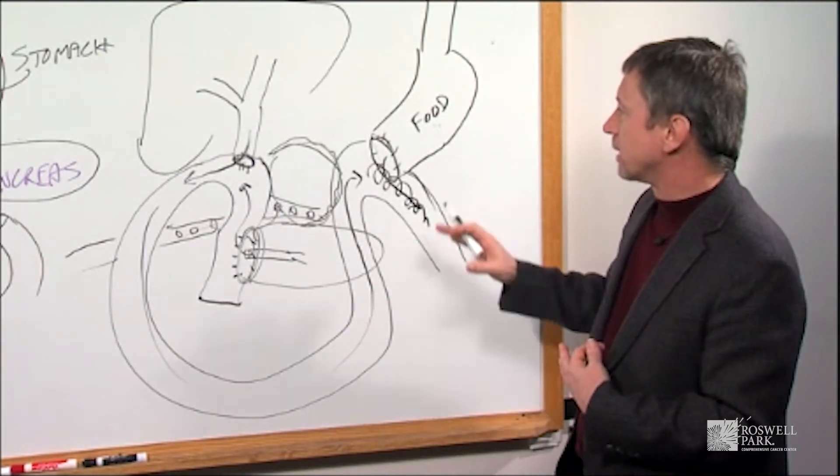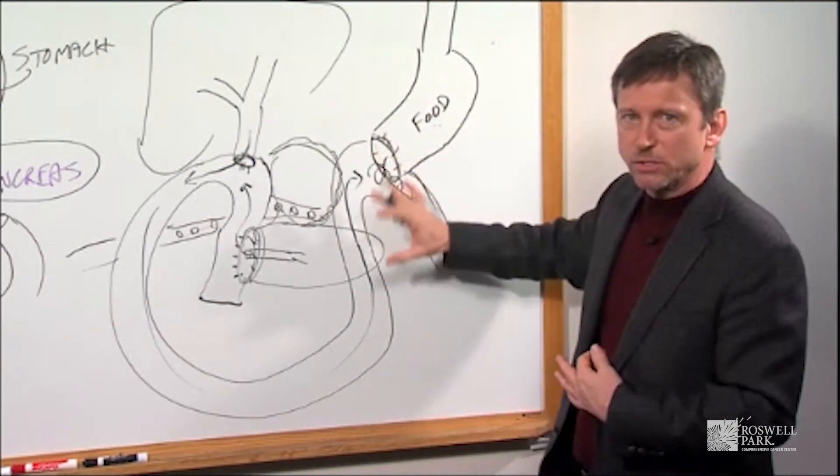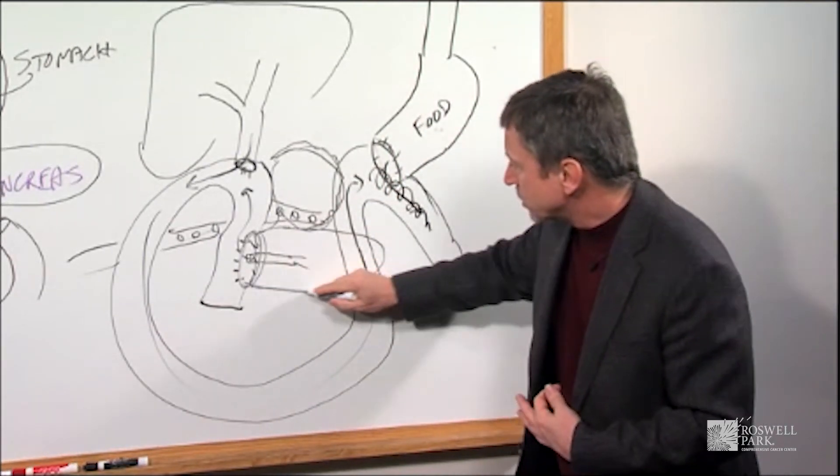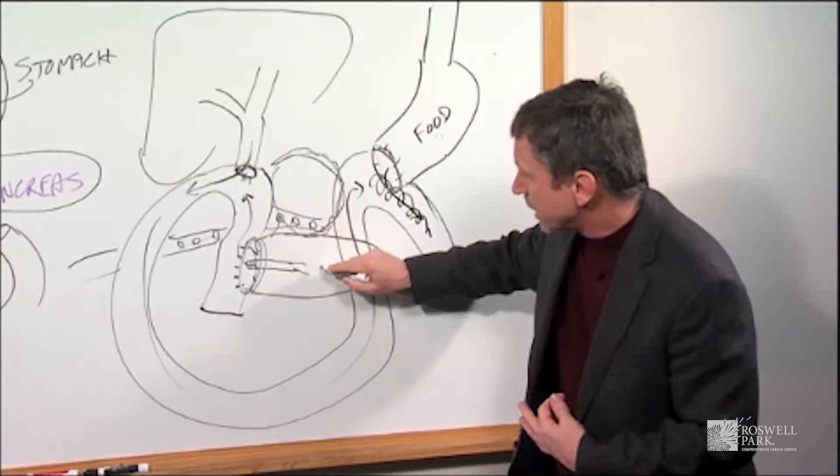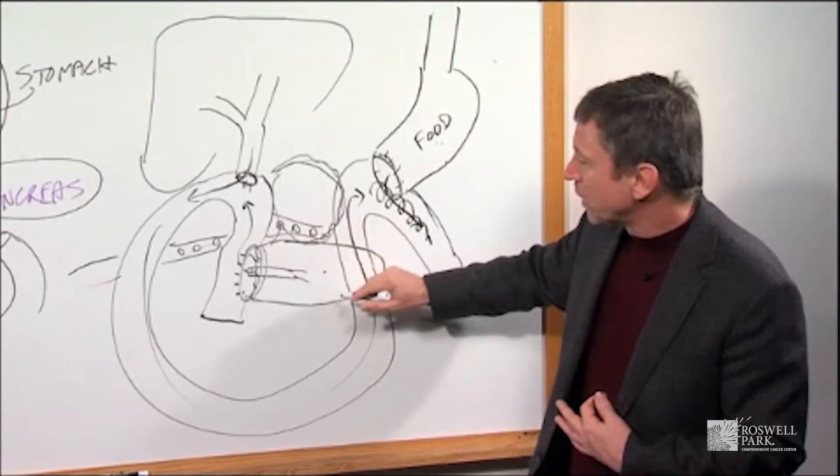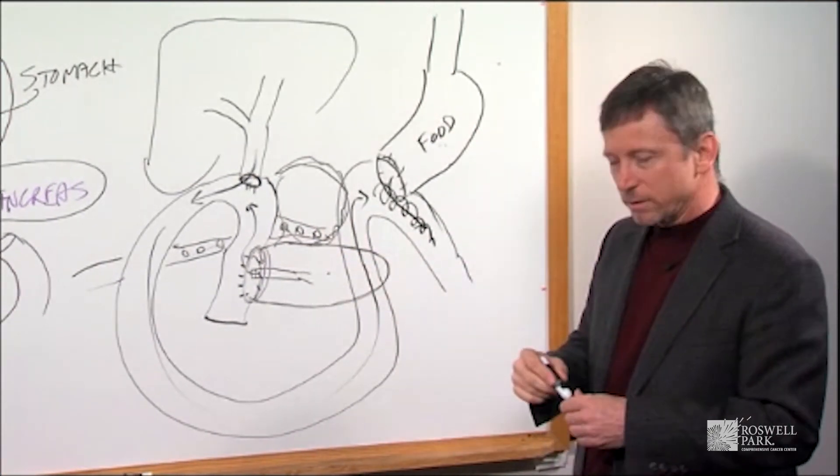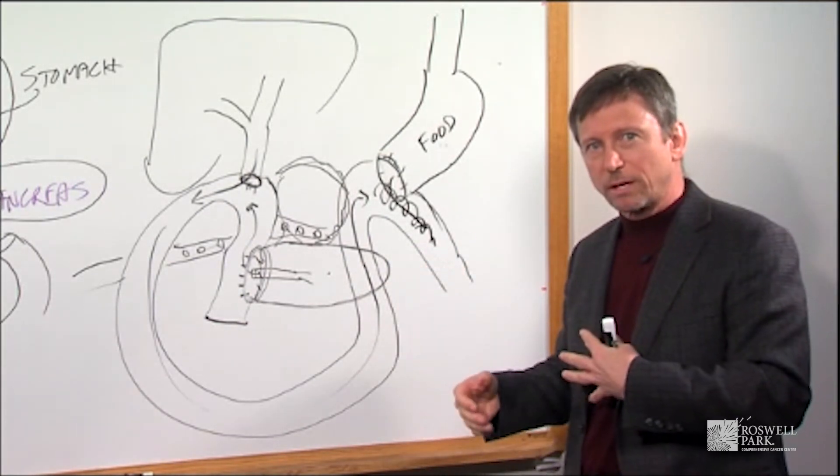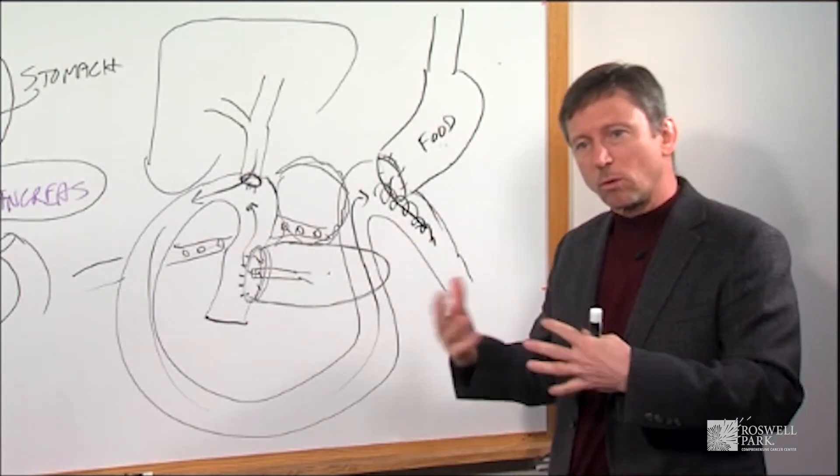And we can make some modifications of the diet to help with those symptoms. The other thing I will mention about the tail of the pancreas, it does make insulin, and so patients who are diabetic may find that their sugars are a little harder to control after the surgery. They may need more insulin.